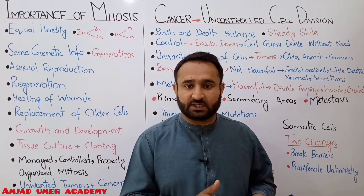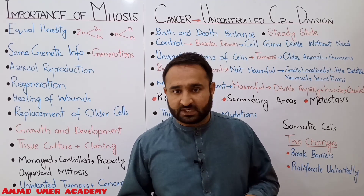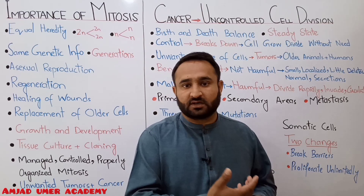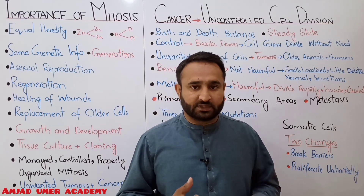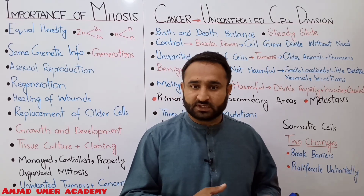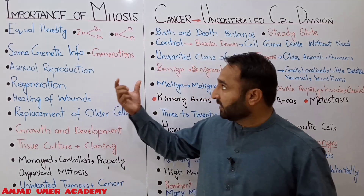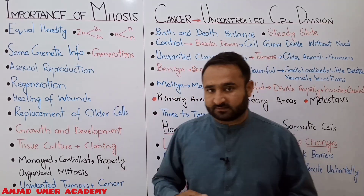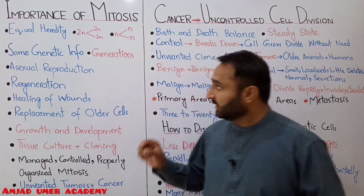Meiosis is a reduction division, in which the parental cell divides into four daughter cells, and the chromosome number becomes half. So now we will look at the importance of mitosis.